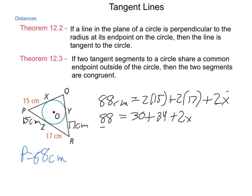Subtraction property of equality tells me that 24 is equal to 2X, meaning that X is equal to 12. So each of these missing side lengths is 12 centimeters in length.